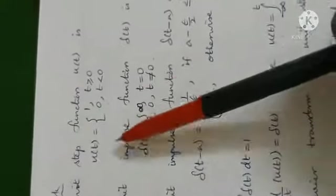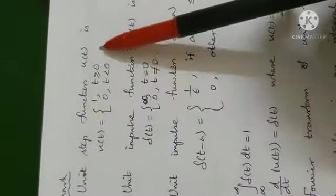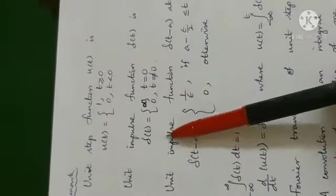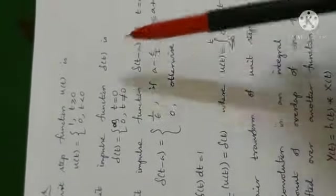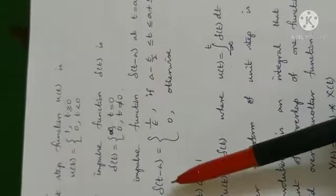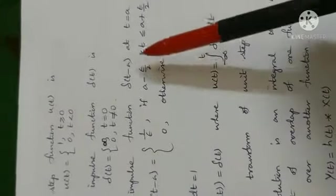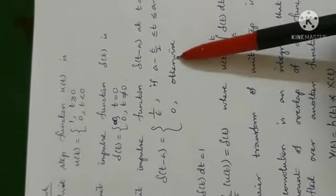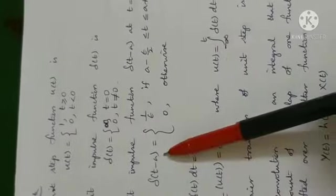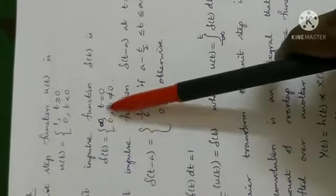Next we do this problem. Listen here. First you should know the definition. What is unit step function? Unit step function is 1 when t is positive, 0 when t is negative. Unit impulse function delta of t. Let us define first then we go to this one. See, unit impulse function delta of t minus a equals 1 by epsilon if t takes value from this to this, 0 otherwise.